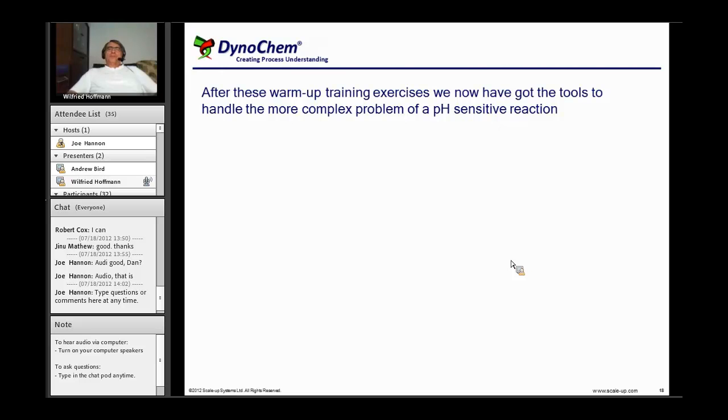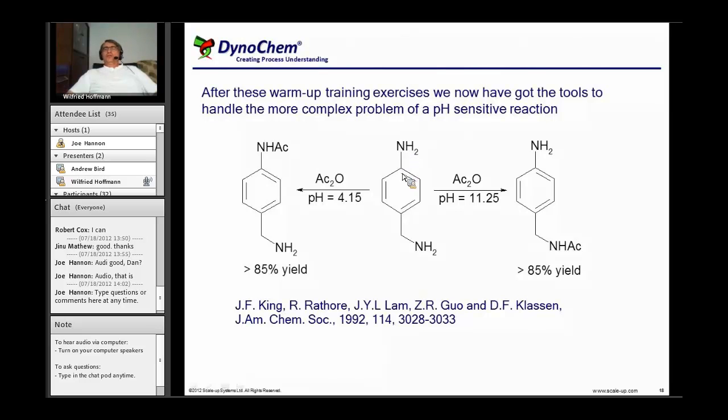Now we want to approach the problem of pH-sensitive reactions and selected from literature the acylation of 4-aminobenzylamine. Literature tells that when you add an equivalent of acetic anhydride, depending on the pH of your reaction solution, you will get either predominantly acylation of the benzylamine nitrogen when you work with alkaline pHs around 11, or you get predominantly the aniline being acylated when you work at pHs around 4. What we would like to do is get the necessary understanding of why that's true and generate a DynoChem model which can predict exactly these findings.